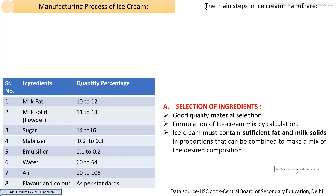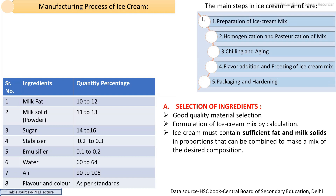The processing steps are in five stages: first, preparation of the ice cream mix; then pre-processing including homogenization and pasteurization; followed by chilling and aging; then addition of other ingredients such as flavor; then the important stage of freezing the ice cream mix; and finally packaging. These are the main stages.